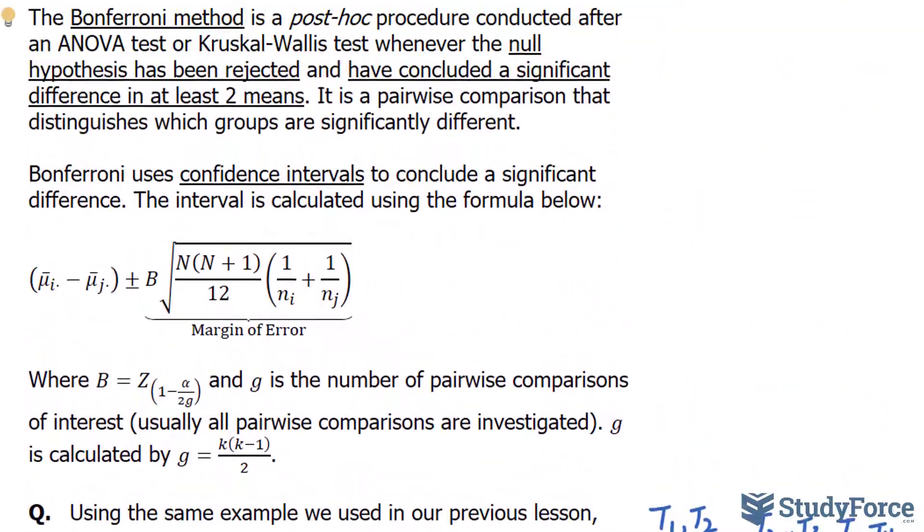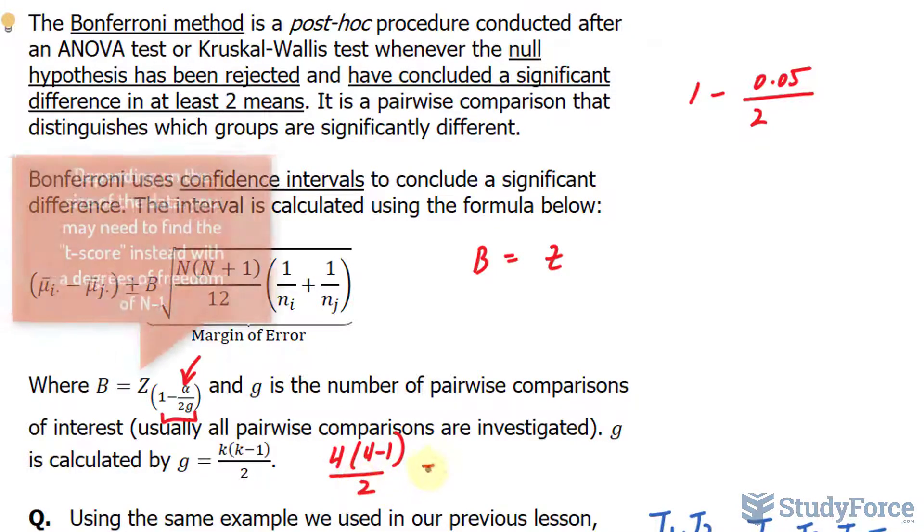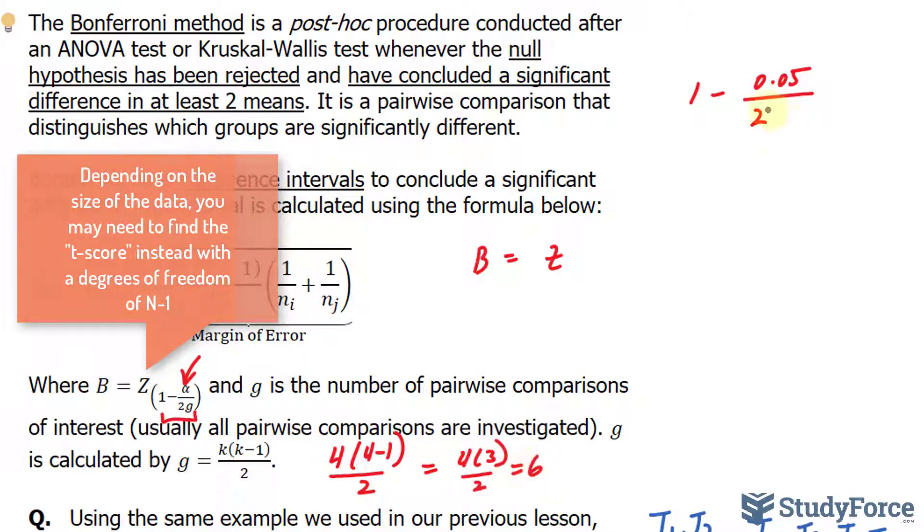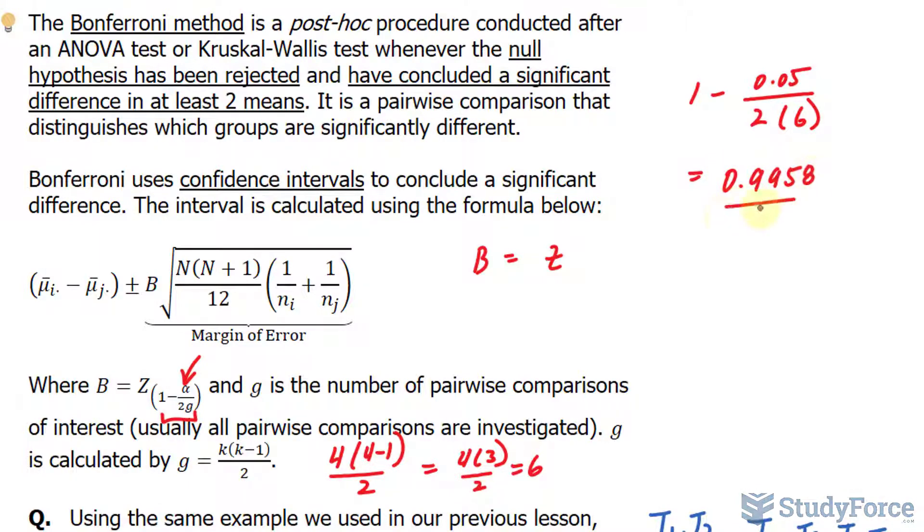Now that we've filled in this column, we will concentrate on finding the margin of error. The margin of error is pretty large. Let's begin with factor B. Factor B is a Z-score, and this Z-score has the following probability, which we calculate in here. So we'll focus on that. 1 minus 0.05 over 2 times G, and G is 4 bracket 4 minus 1, K represents the number of treatments in this case, over 2. 4 times 3 over 2 is 6. Let's place this into our calculator and get the probability. 1 minus 0.05, and let's put that in brackets because we are dealing with a fraction, divided by 12. We get 0.9958.